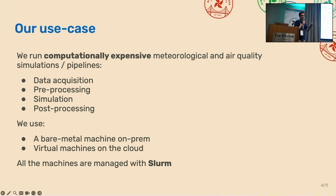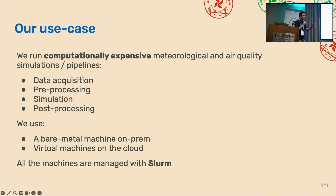Slurm does a great job at allocating resources. Imagine an Airflow task or a job — you can tell Slurm that this job is of high priority, needs this much memory, this many nodes, this many CPUs. And Slurm will help you parallelize this job across all of your cluster and make sure it runs on time.